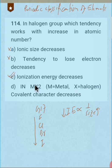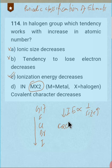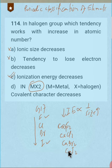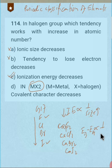Since the formula is MX₂, we take a divalent metal — for example, calcium. So we have calcium fluoride, calcium chloride, calcium bromide, and calcium iodide. Down the group, electronegativity of the halogen decreases — most electronegative is fluorine, least is iodine. The difference in electronegativity of the two bonded atoms is inversely proportional to covalent character.